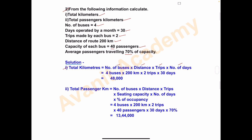Number of buses: they are operating 4 buses. Distance of route: 200 kilometers. Trips made by each bus: 2. Number of days operated per month: 30 days. Now multiply all these: 4 × 200 × 2 × 30, and you will get 48,000 kilometers. So the total kilometers is 48,000.